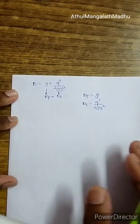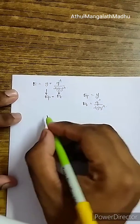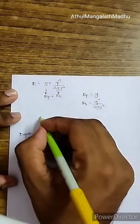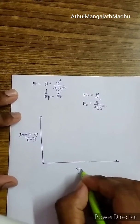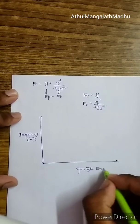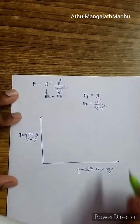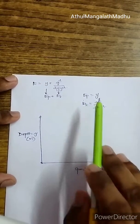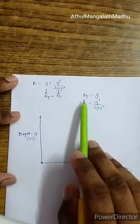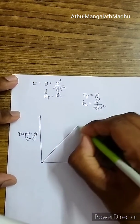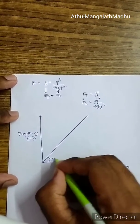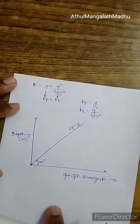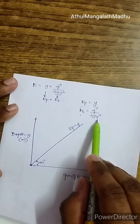Now I will draw a graph between energy and depth, with depth y on the vertical axis and specific energy E on the horizontal axis. If I plot EP versus y, since EP = y, the relationship is linear: when y = 1, EP = 1; when y = 2, EP = 2. This gives a straight line at 45 degrees.